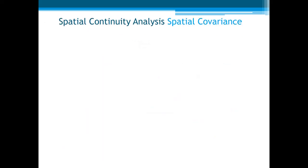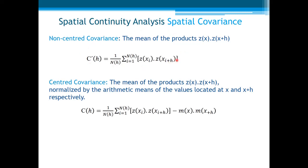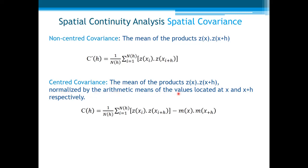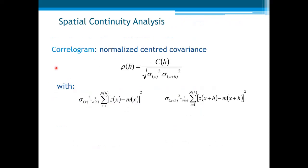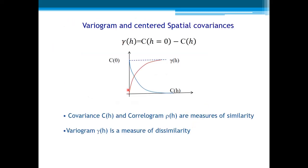Just to finish the lecture, let us see other statistics that can also measure the spatial continuity of a physical phenomena. For example, non-centered covariance, which is the mean of the product of z(x) and z(x+h). Or the centered covariance, which is the mean of the product, but normalized by the arithmetic means of the values located at x and x+h. We can easily also derive the mathematical relationship between the variogram and the centered covariance.